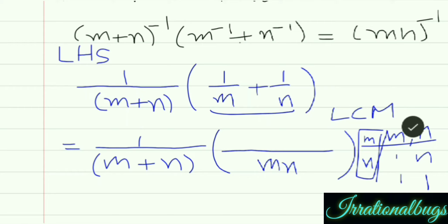So LCM we have is m into n, that is mn. Now m, we multiply by n to get mn. Similarly, n we multiply by m to get mn, so 1 multiplied by n and 1 multiplied by m.